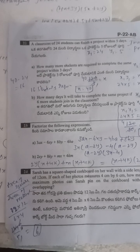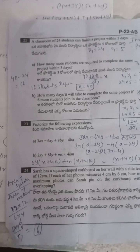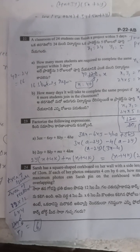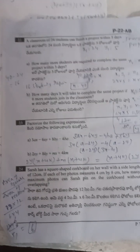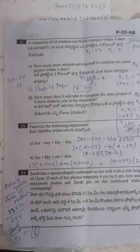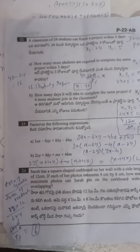Next: factorization of 3ax minus 6xy plus 8by minus 4ba. Grouping terms: (3ax minus 6xy) plus (8by minus 4ba). Factoring each group gives (a minus 2y)(3x minus 4b) as the factored form.